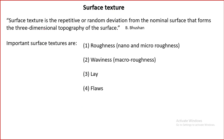Surface texture is the repetitive or random deviation from the normal surface that forms the three-dimensional topography of the surface. It includes nano and micro roughness as well as macro roughness (waviness). Roughness is produced by manufacturing irregularities or feed rate effects during the production process such as machining and turning — the feed of the tool produces features that appear as roughness.